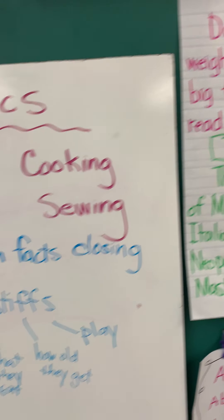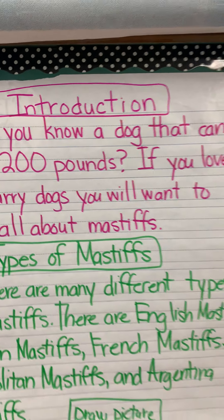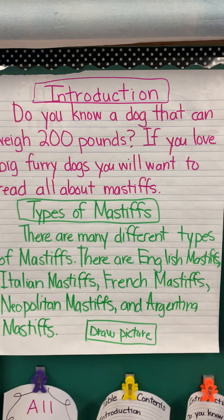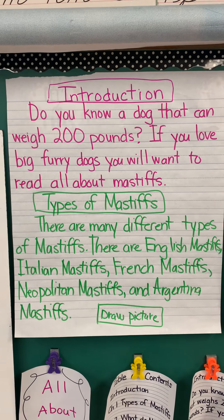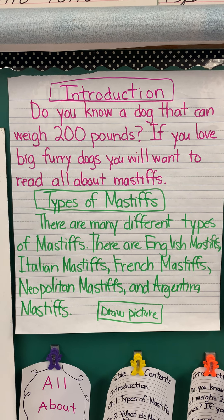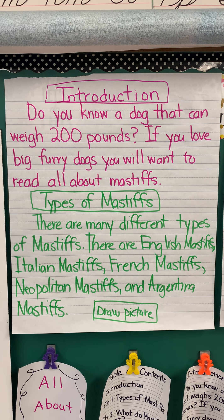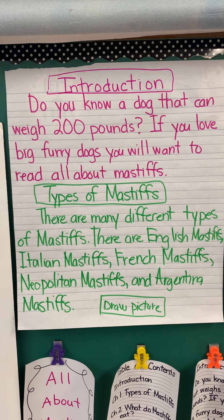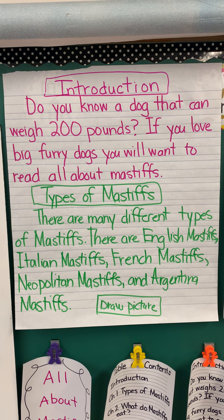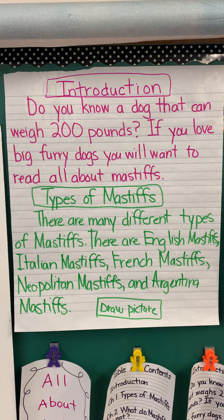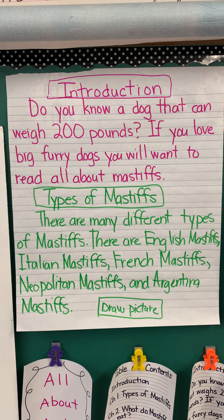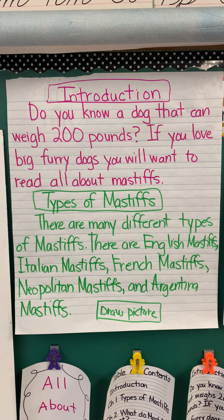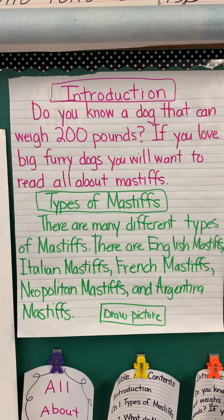I began with an introduction. I started with a hook that would really get the reader wondering what my informational report is going to be about and what the reader might learn. For example: Do you know a dog that can weigh 200 pounds? If you love big furry dogs, you will want to read all about mastiffs.